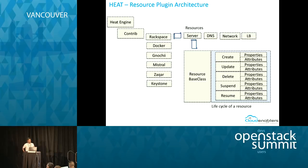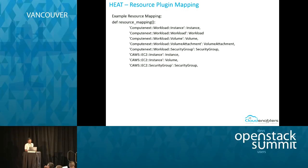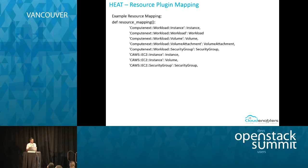Each plugin has resources. For Rackspace, we see server, DNS, network, and load balancer resources. Each resource has lifecycle methods — a base class that can be extended for create, update, delete, and resume. Each method has attributes and properties: properties are what we provide as input to the plugin, and attributes are what we get back as a return for that particular lifecycle method.